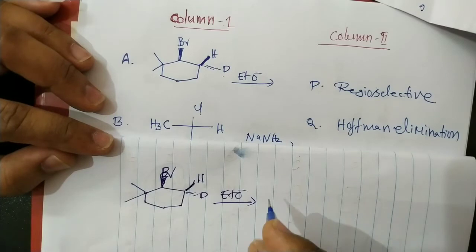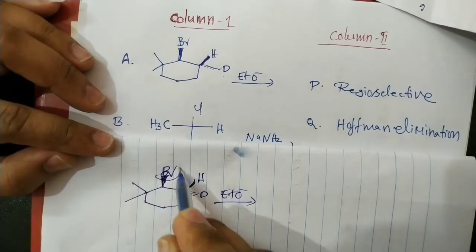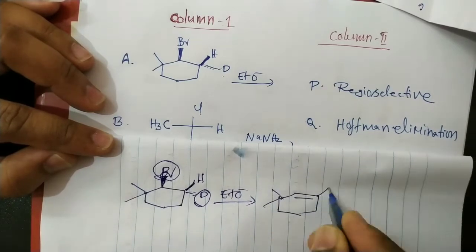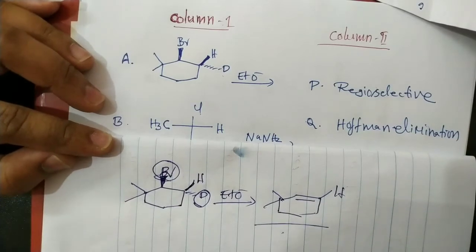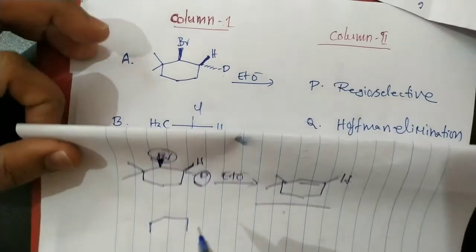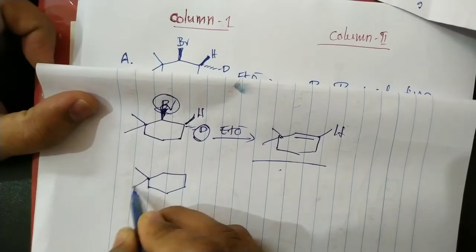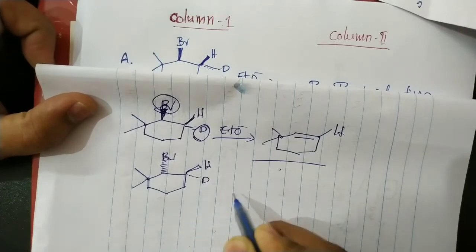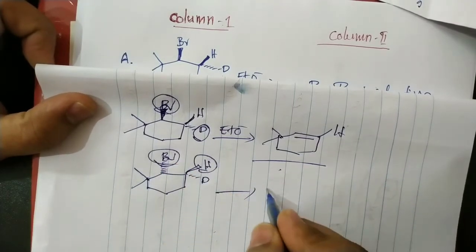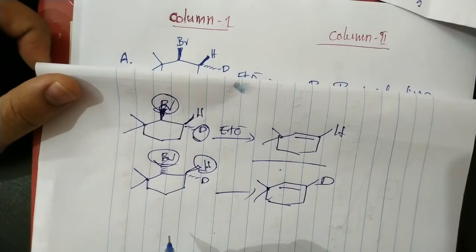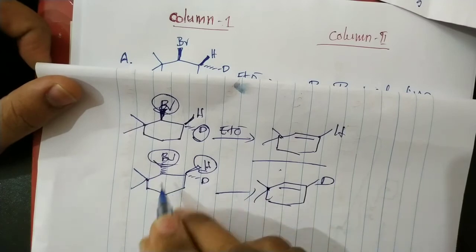In an E2 elimination reaction, the groups which are trans to each other are eliminated. So bromine and deuterium are eliminated in this reaction. The product is this one. It is a stereospecific reaction.